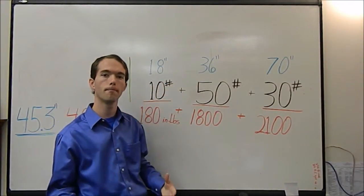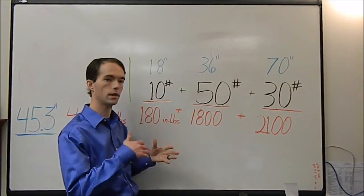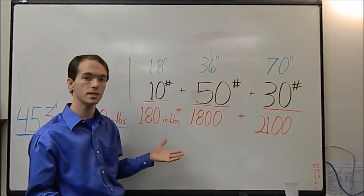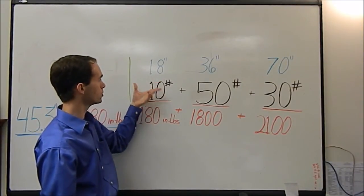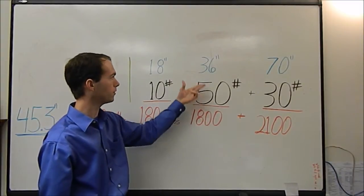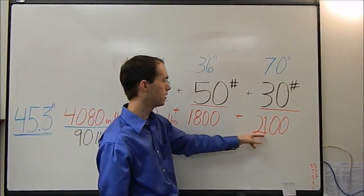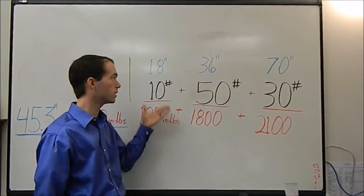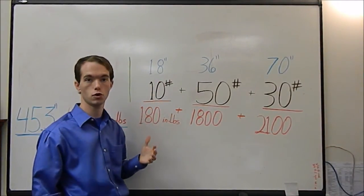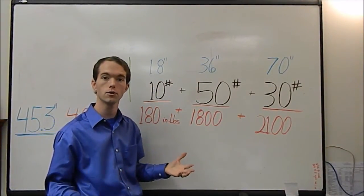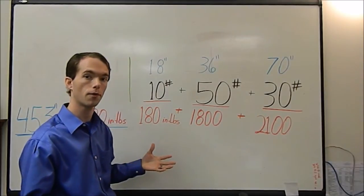So then what you do is you calculate the moment. The moment is simply a torque. It's a force times a distance. So you've got your force at a distance at each point: 36 and 50, 1800, 2100 here. These are in inch-pounds because we used inches and pounds. You could use foot-pounds, newton-meters, anything. Just be consistent throughout the whole thing.